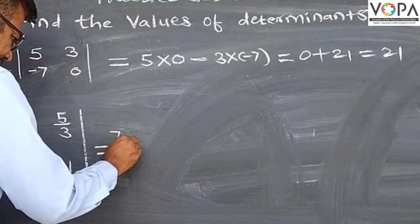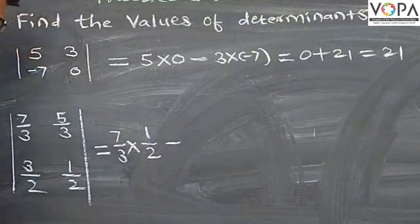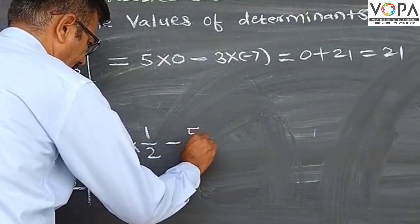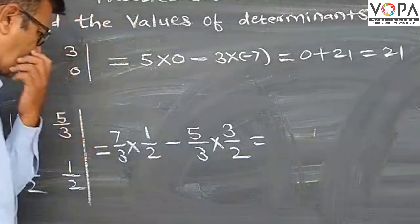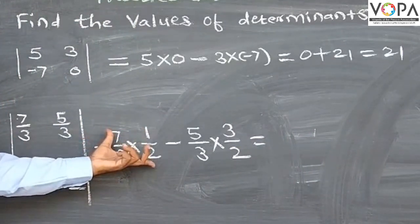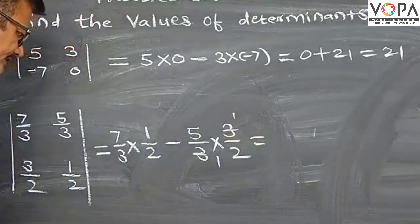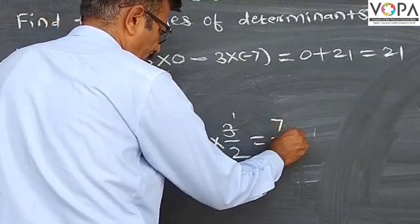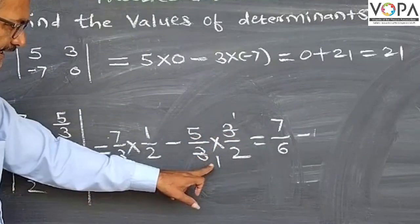Next: 7 by 3 multiplied by 1 by 2 minus 1 upon 3 multiplied by 3 upon 2. 7 by 3 times 1 by 2, divided by 3 times 3 by 2. This is 6 times 6 minus 5.